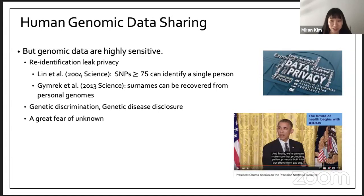But genomic data are very sensitive and contain a large amount of personal information. In 2015, former President Barack Obama spoke about the precision medicine initiative and encouraged biomedical data sharing. He also mentioned making sure about patient privacy. Unsurprisingly, there are several re-identification attacks. For example, Lin et al. showed larger than 55 SNPs can identify a single person. There may be genetic discrimination, and people are worried about inappropriate use of their data. It's a great fear of unknown.